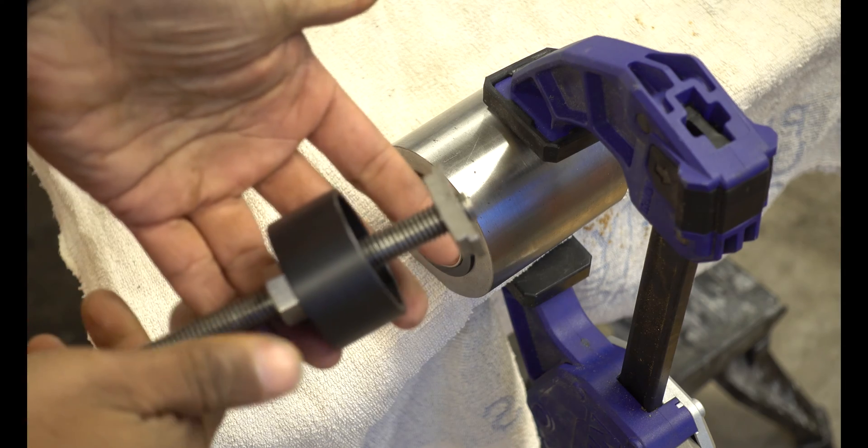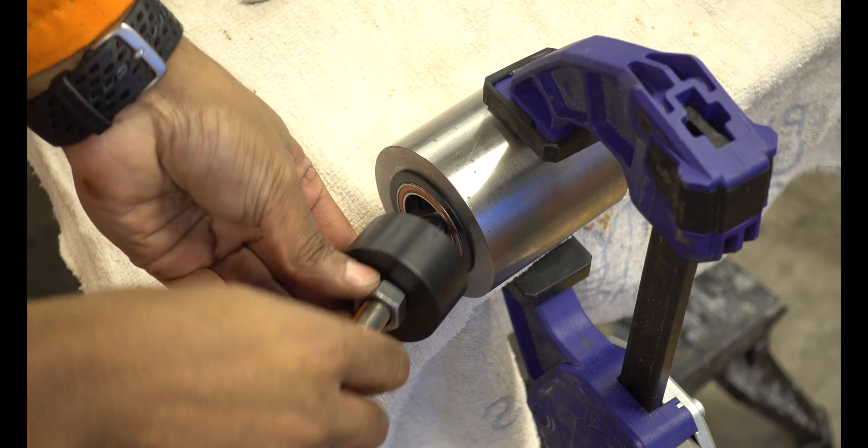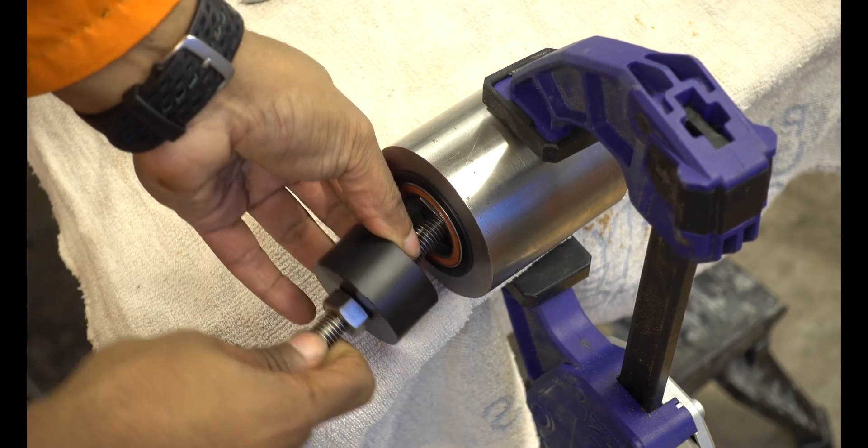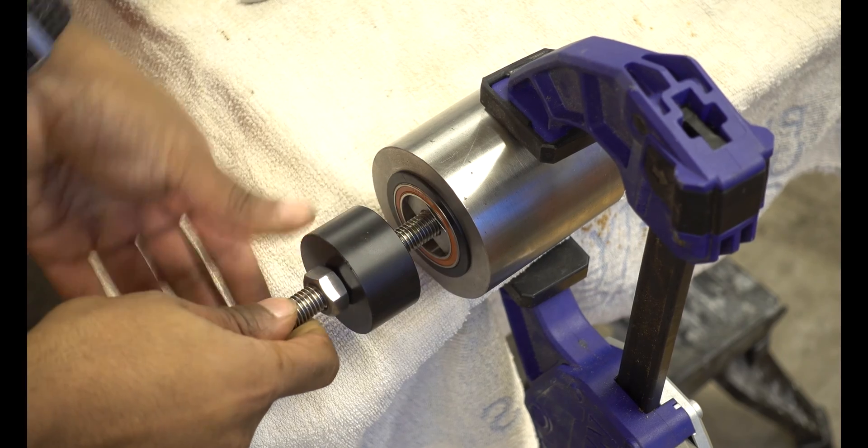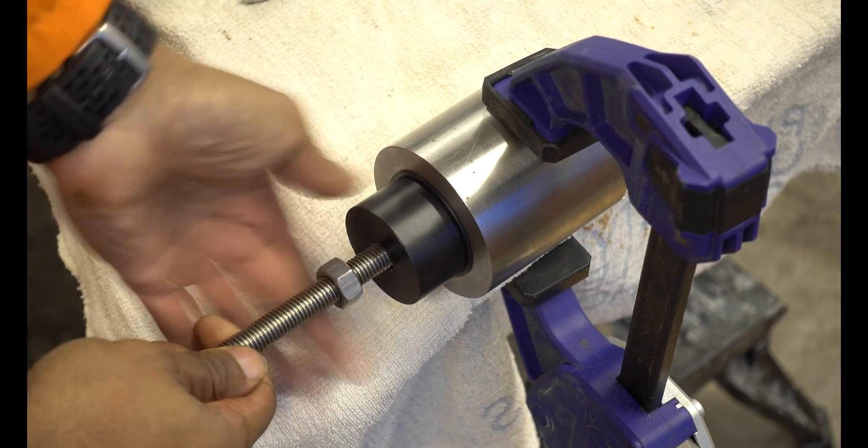So if we go for the recommended method first of all, put the hook through, make sure you seat it well into the bearing, pull back, push the sleeve up, and tighten the nut.